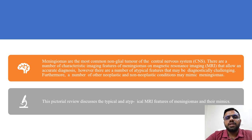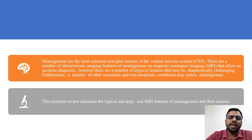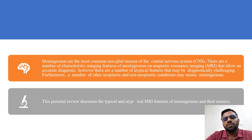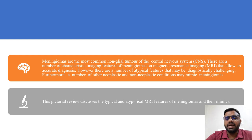Meningiomas are the most common non-glial tumour of the CNS. There are a number of characteristic imaging features of meningiomas on MRI that allow an accurate diagnosis. However, there are a number of atypical features that may be diagnostically challenging. Furthermore, a number of non-neoplastic and neoplastic conditions may mimic meningiomas. This pictorial review discusses the typical and atypical features of meningiomas on MRI and their mimics.